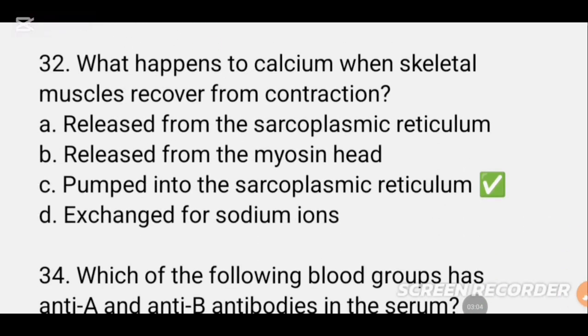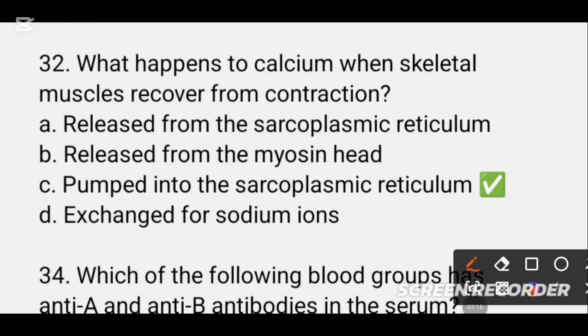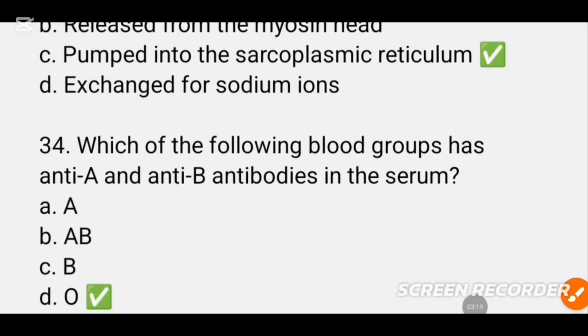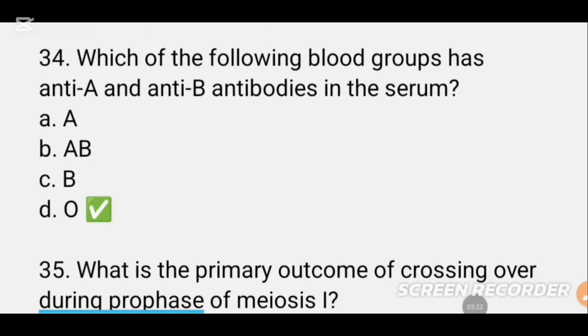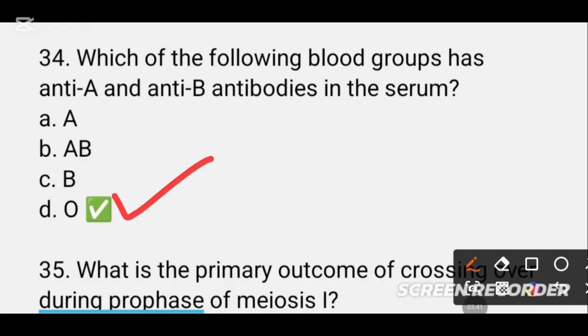MCQ number 32. What happens to calcium when skeletal muscle recovers from contractions? MCQ number 33 covers blood groups and antibodies in the serum. Blood group AB has more antibodies A and B. When a cell has the same antibodies, the B cells are also involved.